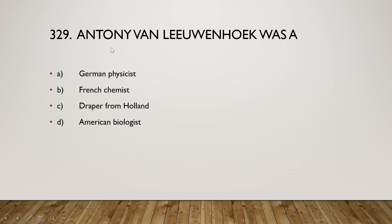The right answer is option A, penicillin, which is the first natural antibiotic discovered. The next question is: Anthony van Leeuwenhoek was a German physicist, French chemist, draper from Holland, or American biologist? The right answer is option C — he was a draper from Holland, or we can say he was a merchant seller.